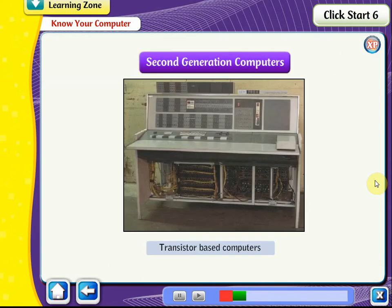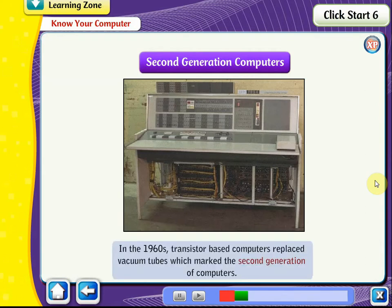Second Generation Computers: In the 1960s, transistor-based computers replaced vacuum tubes, marking the second generation of computers. Transistors made computers smaller, cheaper, and more energy efficient, but they were subject to damage because of the emission of large amounts of heat. Computers of this generation used punched cards for input and assembly language.